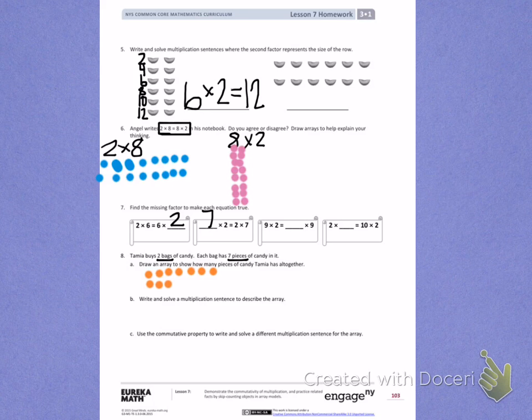1, 2, 3, 4, 5, 6, 7. There is an array that shows how many pieces of candy she has altogether.